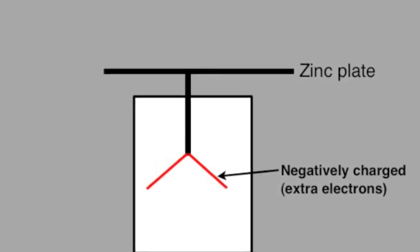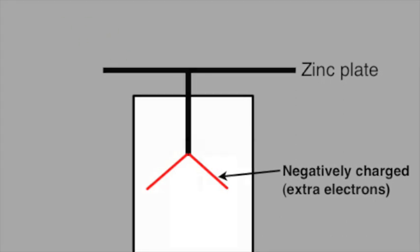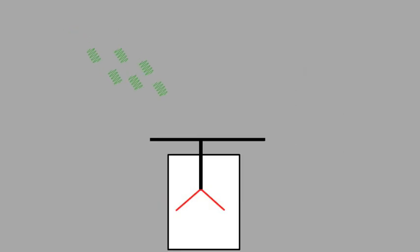We could illuminate the zinc plate with all sorts of colours of light, but we're going to consider two. If we shine green light onto the plate, then it reflects, but nothing else happens.